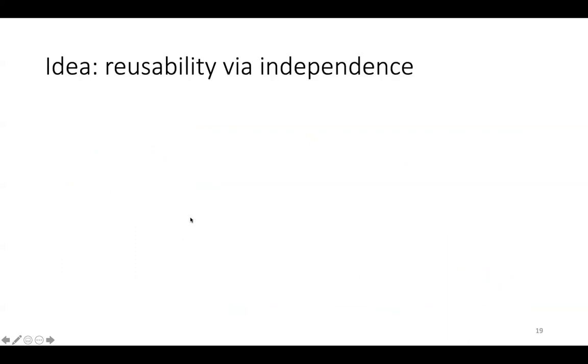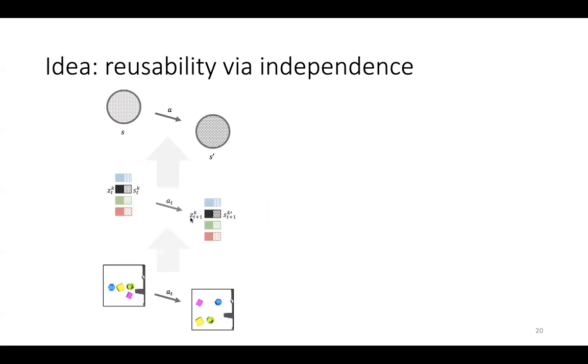At the core, our goal is to represent reusable transformations over entity representations. Concretely, we want to abstract this visual transition into a state transition that is independent with respect to the specific entity and the context. If we can do that, then we will be able to reuse our representation of the state transition on different entities and different contexts. In order to throw away information about the specific entity and the context, we will construct a two-level hierarchy.